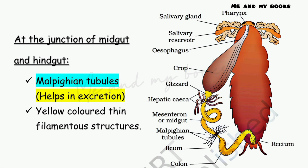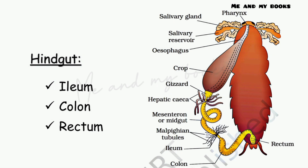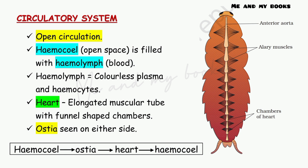At the junction of midgut and hindgut, there is a structure called Malpighian tubules. Their function is to help in excretion. The parts seen in the hindgut are ileum, colon, and rectum. The rectum finally opens out through the anus. These are the different parts of the alimentary canal of cockroach.